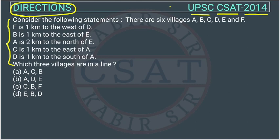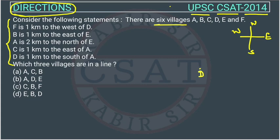So, what is given — consider the following statement. There are six villages: A, B, C, D, E, and F. Whenever we have a direction question, we will draw a compass diagram with north, south, east, and west. Now, the first statement says F is 1 kilometer to the west of D. Suppose this is D — so F is placed here, 1 kilometer to the west.